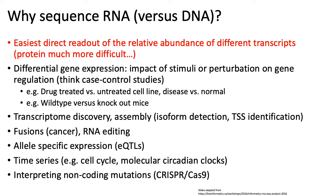RNA expression data is also used to detect eQTLs, or expression quantitative trait loci. A large part of the human genetics community is interested in characterizing the mechanism of action of genetic variants associated with complex traits and diseases. One approach is to use RNA sequencing to detect changes in gene expression associated with different genetic variants, as a means of identifying what genes might change in regulation with respect to variants sitting in, for example, enhancers.